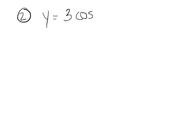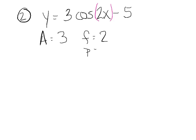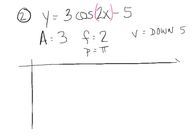Our next example: y equals 3 times the cosine of 2x minus 5. What are we taking the cosine of? Without visible parentheses, we assume it's the first term only. In this curve, the amplitude is 3, the frequency is 2, which makes the period 2 pi divided by 2, which is pi. Most importantly today, the vertical shift is down 5 units. I'm going to put the x-axis quite high on the page so I have room to go down 5 units. With a midline at negative 5 and amplitude 3, the highest point is negative 2 and the lowest point is negative 8.